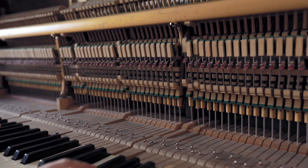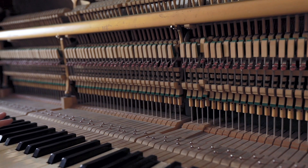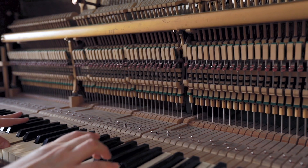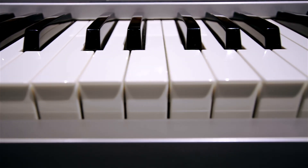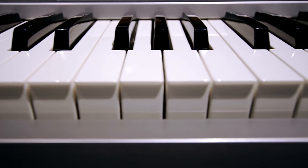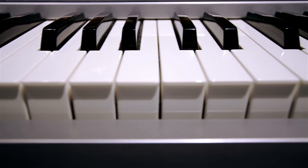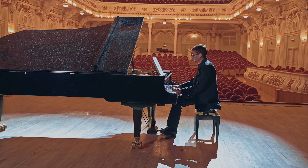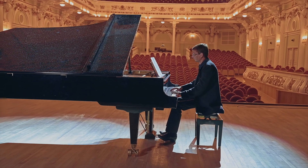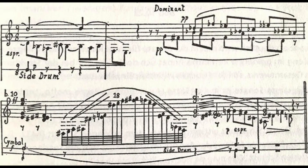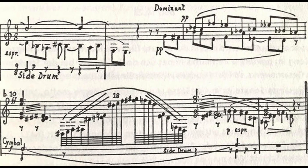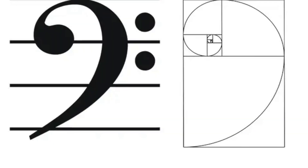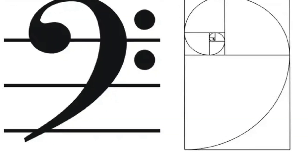On a piano, the arrangement of black to white keys is by no mistake — these are built to the golden ratio. That's because the musical scales and notes align with the Fibonacci sequence, or the golden ratio.